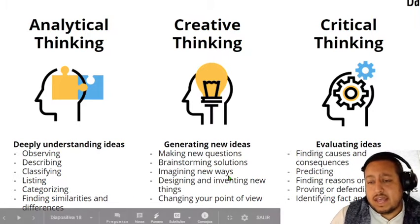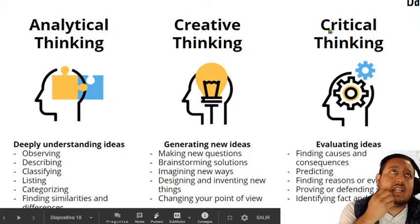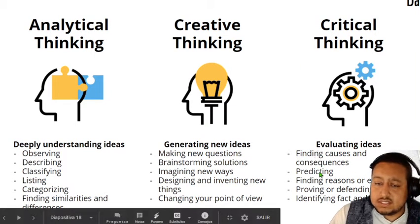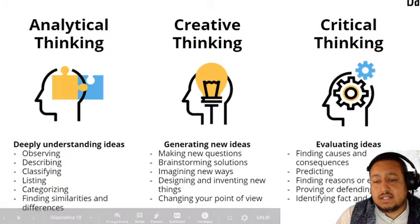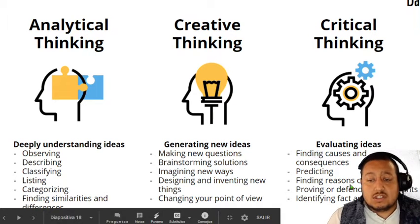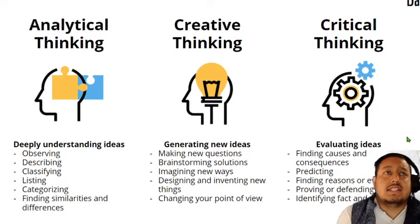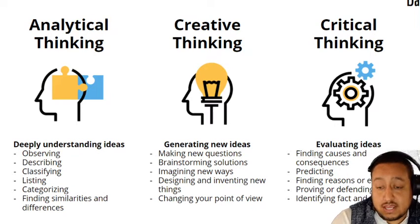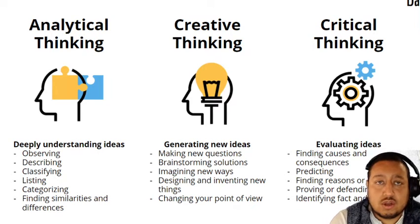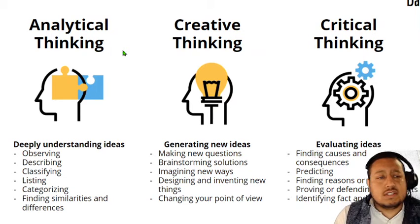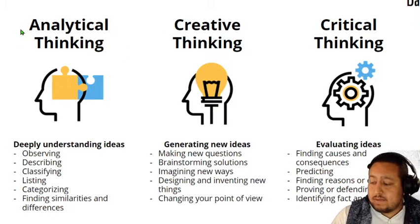Critical thinking: evaluating ideas. Finding causes and consequences. Predicting. Finding reasons or evidence. Proving or defending statements. Identifying facts and opinions. Entonces en el pensamiento crítico ya estás evaluando, encontrando causas y consecuencias, prediciendo, encontrando razones de evidencia, probando o defendiendo argumentos, identificando opciones. Estos tres los trabajamos en la misma imagen.